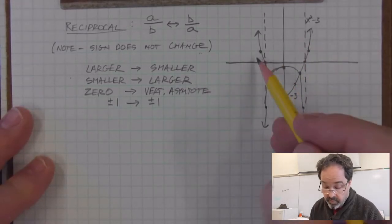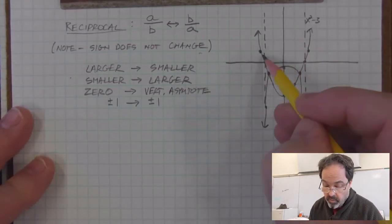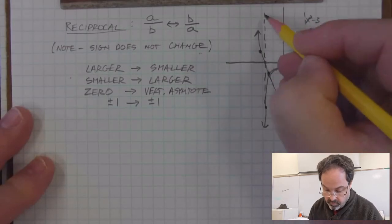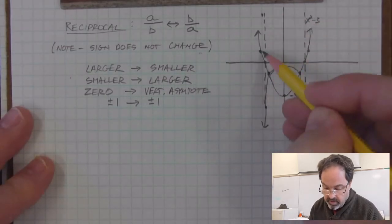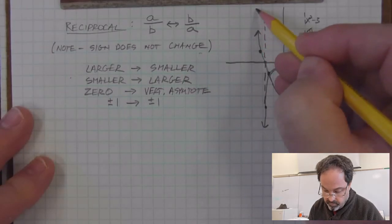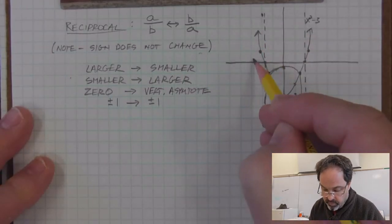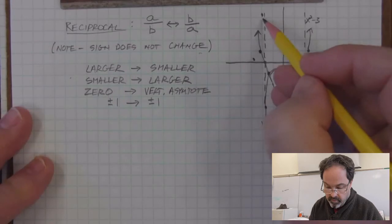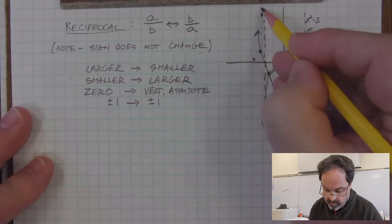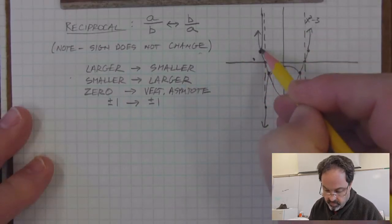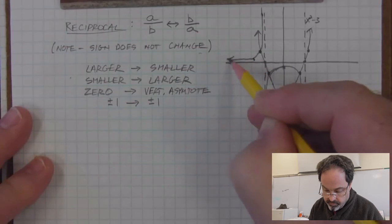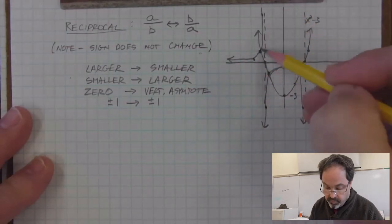What about above? It's going to go through these points. Well, very small positive numbers are going to grow to be very large. And very large positive numbers are going to become very small when I take the reciprocal. So I have a couple of points to guide the curve that will be made when I take the reciprocal of this positive portion.